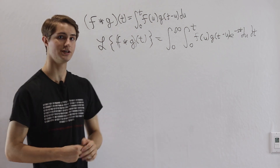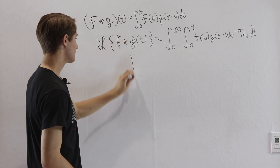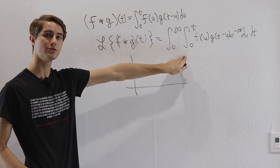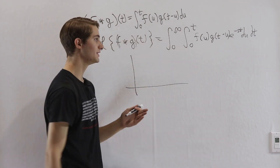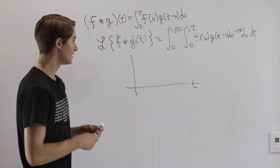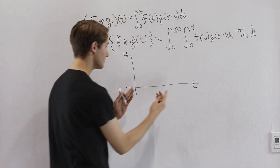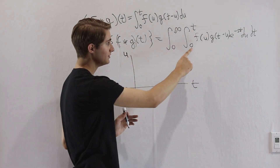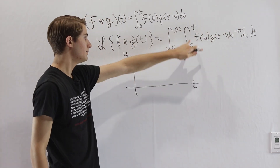If you haven't done multivariable calculus yet, stick with us — we'll be able to figure this out. With a single integral we integrate over a linear range, but with a double integral we're integrating over an area. So when we switch the order, we need to think about a different way to define that area. If we put t on the horizontal axis and u on the vertical axis, t is going to go from 0 to infinity, and for a particular value of t, u goes from 0 up to t.